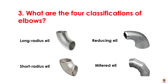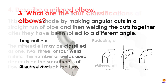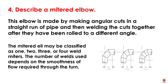What are the four classifications of elbows? Long radius elbow, short radius elbow, reducing elbow, and mitered elbow. A mitered elbow is made by making angular cuts in a straight round of pipe and then welding the cuts together after they have been rolled to a different angle. The mitered elbow may be classified as one, two, three, or four weld mitered — the number of welds depends on the smoothness of flow through the turn.